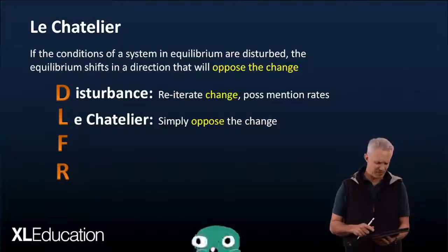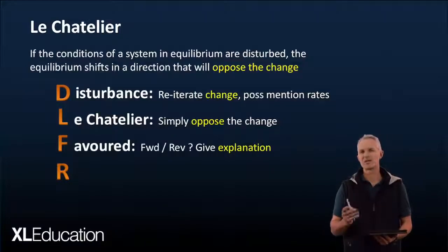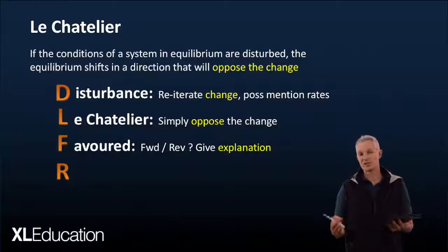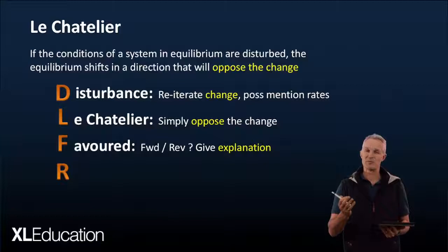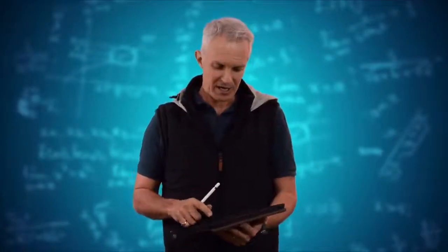Now we get into the chunky stuff and this is interesting. So F stands for favoured. This is now we need to understand the chemistry. So which reaction is going to be favoured in order to do this change? Is it going to be the forward or is it going to be the reverse? And you have to be able to give an explanation of that. Now let's break this down a little bit because this is where things can get a little tricky.